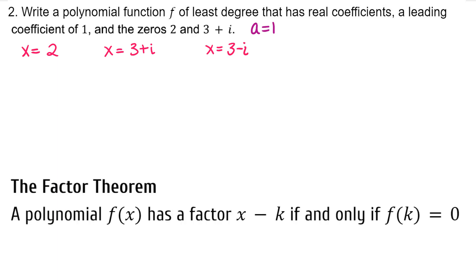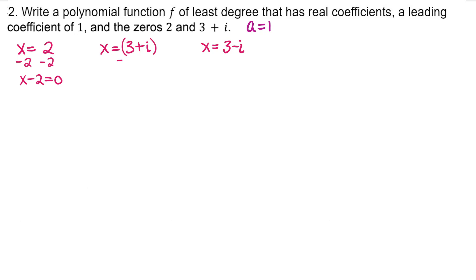Now use the factor theorem to rewrite each of these zeros as a factor equal to 0. Because each of these factors is equal to 0, we can set the product of these three factors equal to 0.